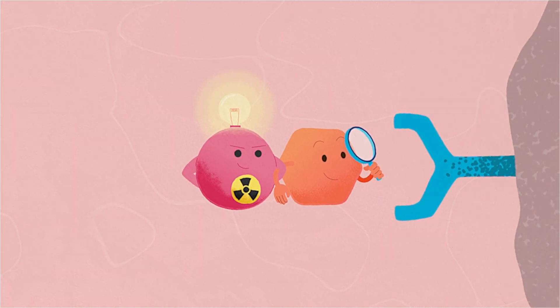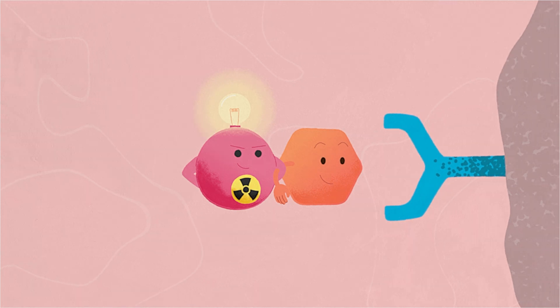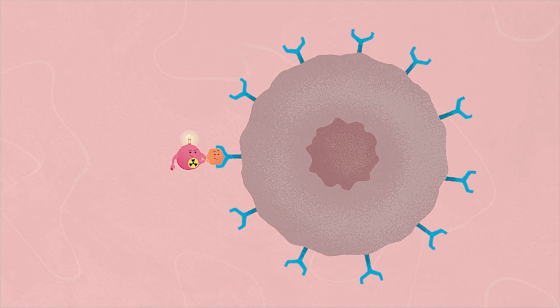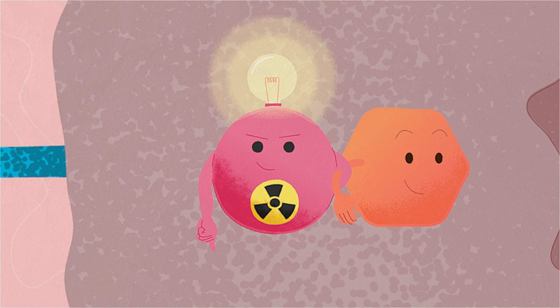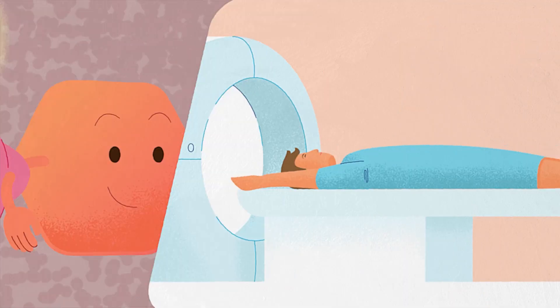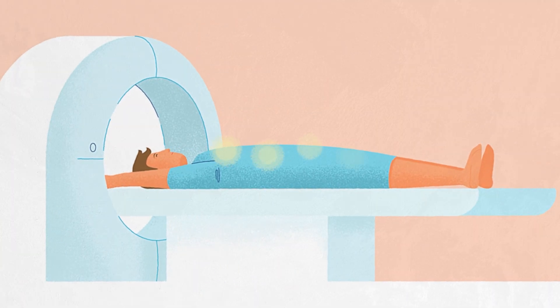After being injected, our Radiotracer searches for cancer cells. Once the cell is identified, the ligand binds to it and enters the cancer cell. The radioactive molecule emits radiations at this same place that will be detected by a scanner.